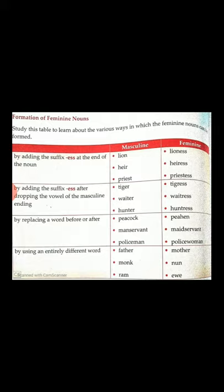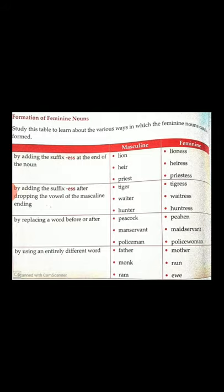The third way of forming the feminine of nouns: some feminine nouns are formed by using an entirely different word. Boy — girl. Brother — sister. Husband — wife. King — queen. Stag — doe. Horse — mare. Wizard — witch. Fox — vixen. Drake — duck. Gentleman — lady.